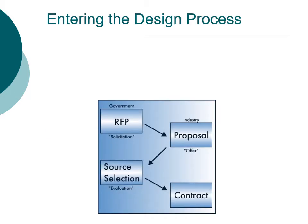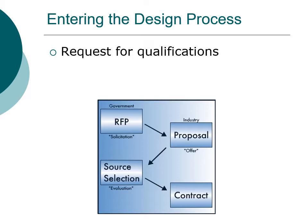The environmental engineer may enter the design process from a number of routes. The three most common routes are: first, the request for qualifications, where the owner is soliciting qualifications from firms that wish to be considered to provide engineering services.